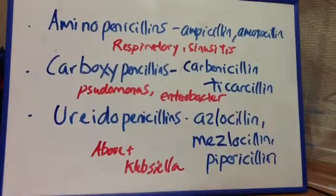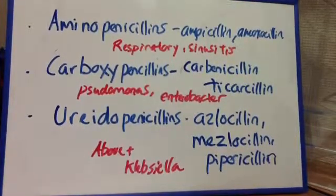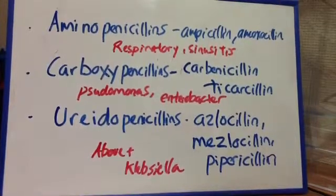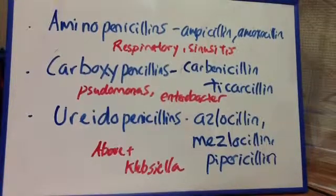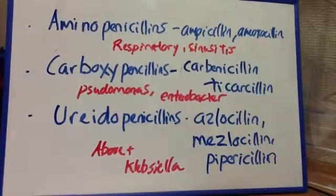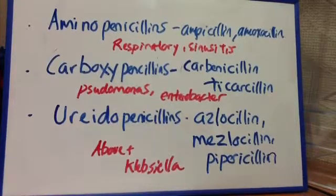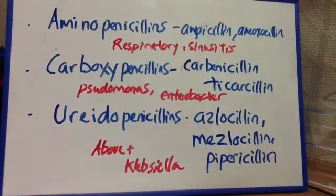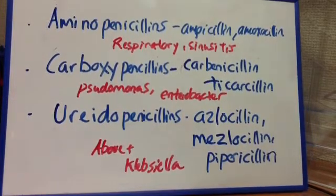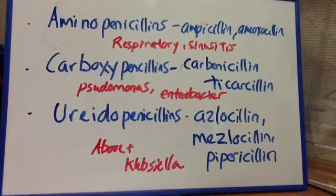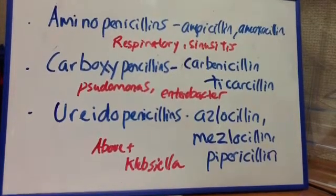For example, the aminopenicillins such as ampicillin and amoxicillin, given PO or IV, may be used for some respiratory infections or sinusitis. But they're not going to be effective against Pseudomonas or Enterobacter, so then you would need to use the carboxypenicillins such as carbenicillin and ticarcillin, which would be effective for those organisms.